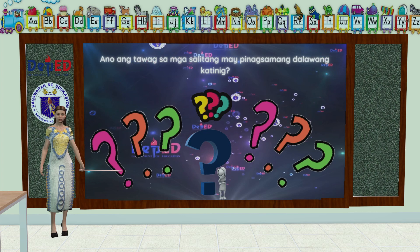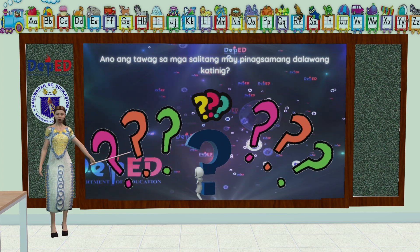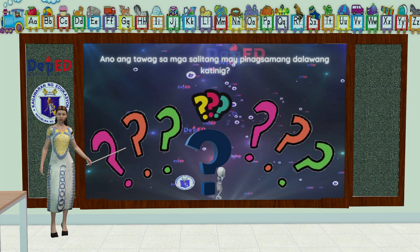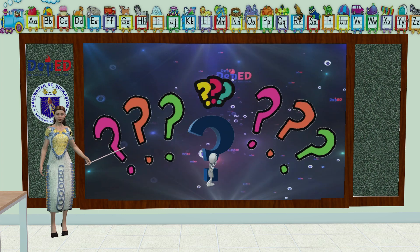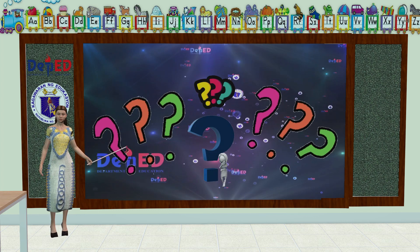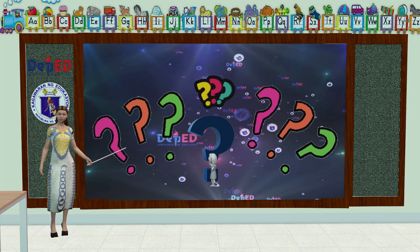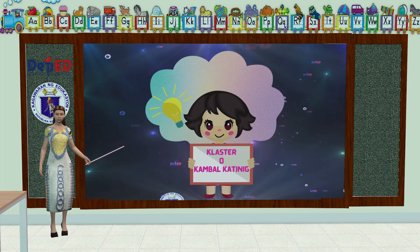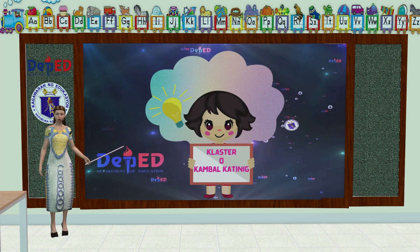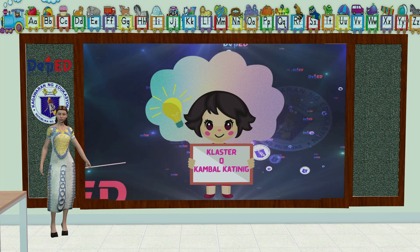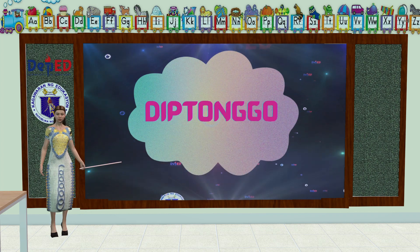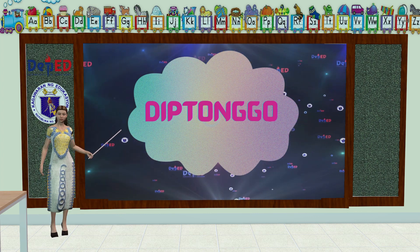Mga bata, ano nga ulit ang tawag sa mga salitang may pinagsamang dalawang katinig? Magaling, mga bata! Ang tawag dito ay cluster o kambal katinig. Alam nyo ba, mga bata, na meron din tayong tinatawag na salitang diptonggo?